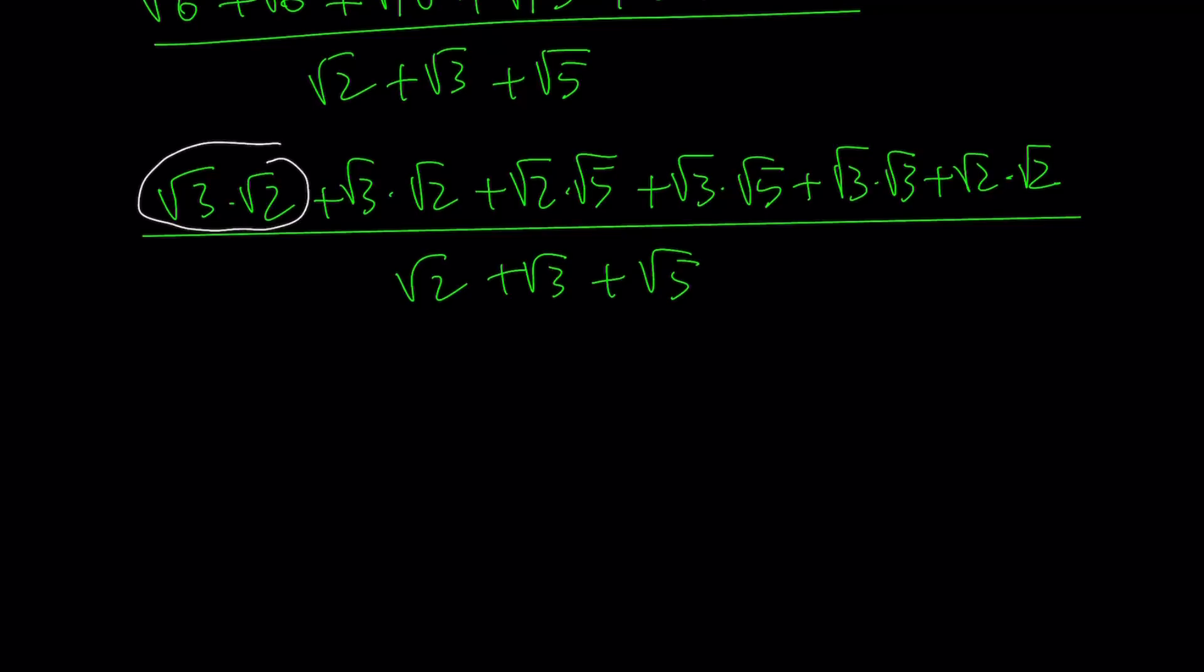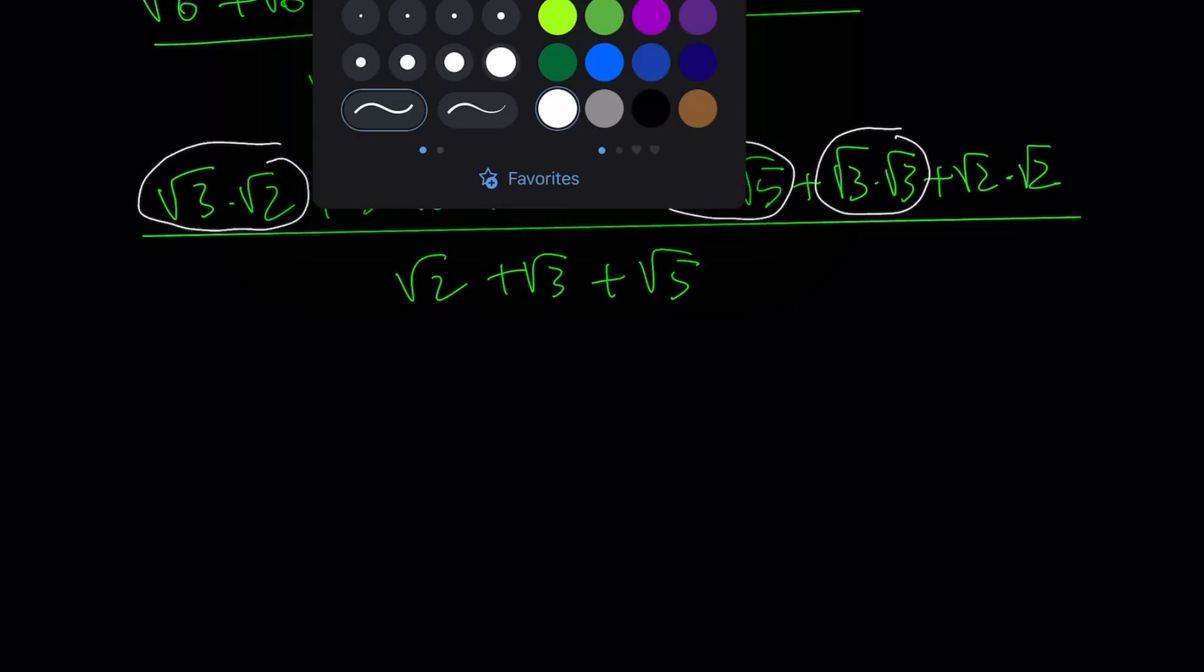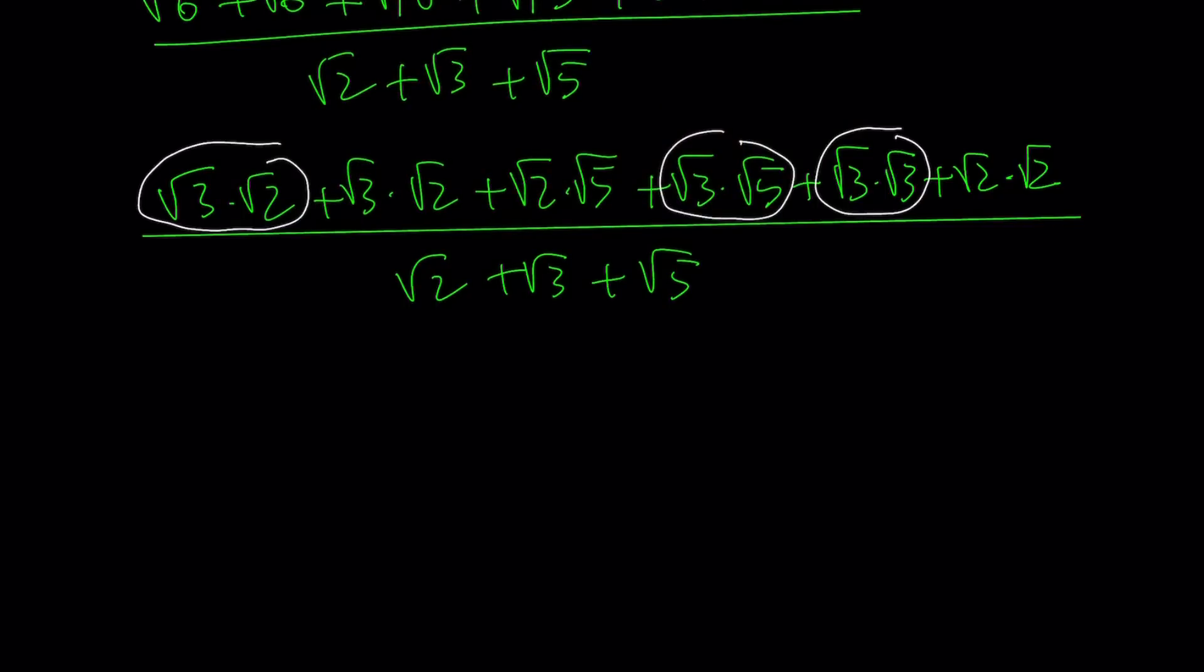I'm going to pick this one, and then I'm going to pick this one, and then I'd like to pick this one. Notice that all three of these terms, they all contain root 3. So that's important. When you're picking terms for grouping by factoring, you want to make sure that they have a common factor. Otherwise, there's no point.